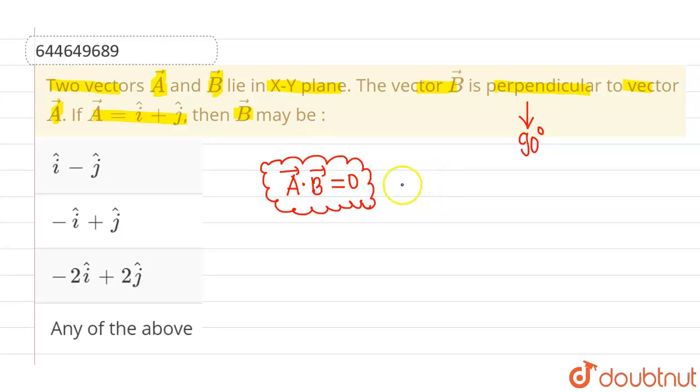Now why is dot product zero? Because their dot product is generally mod A vector, mod B vector into cos theta, where theta is angle between them. Now we know that whenever we put theta equals to 90 degrees, cos 90 is zero, therefore this whole term will become zero. So we can say that whenever two vectors are perpendicular, their dot product is zero.